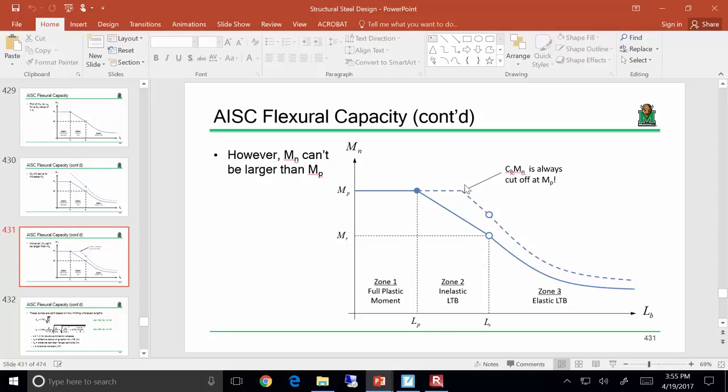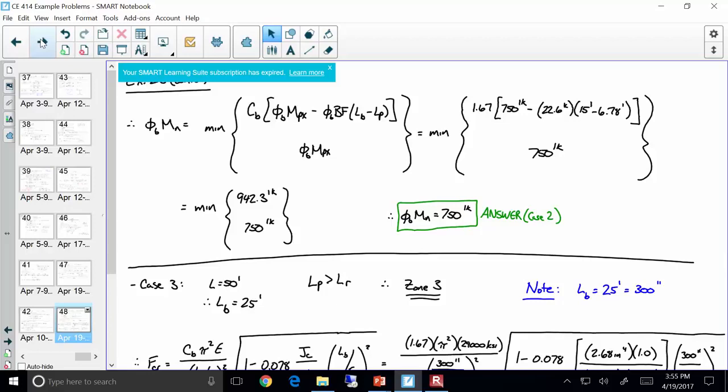Also note that because of C sub B, we could be cut off at M sub P. So, that's something worth mentioning. Now, you go through and do your math because you're in zone two. You have that linear fit. So, start plugging and chugging. Now, remember, we're taking the minimum of whatever our computed linear fit is and M sub P. What we end up finding is that we compute a value of about 940 or so foot kips, but 750 foot kips is M_P.